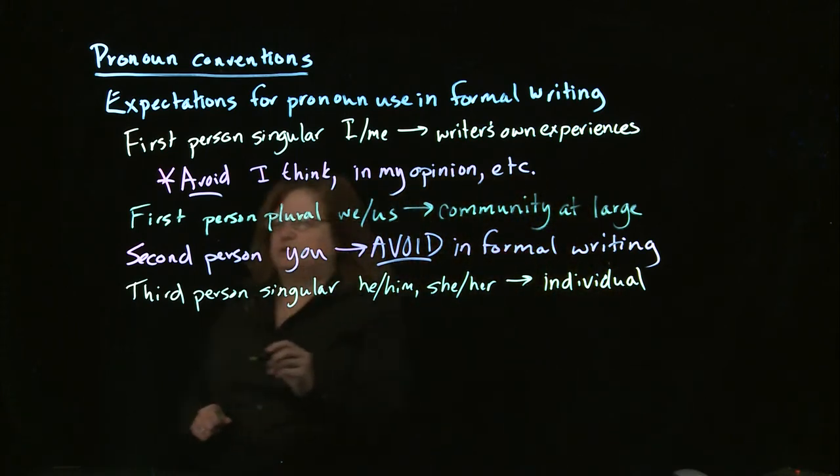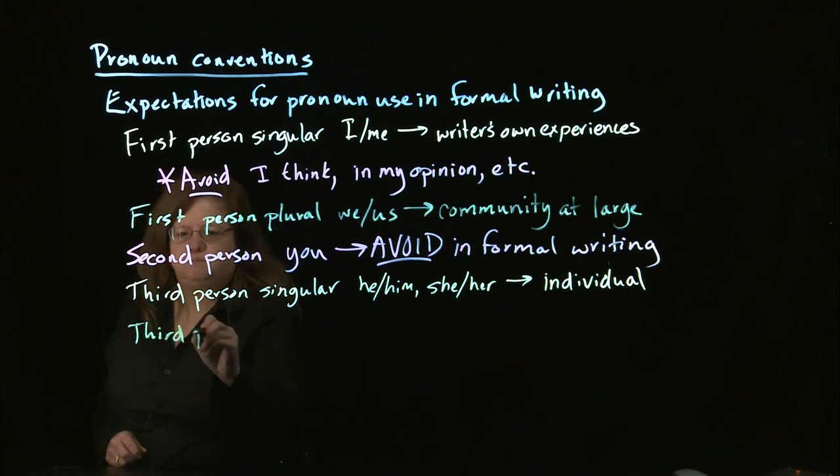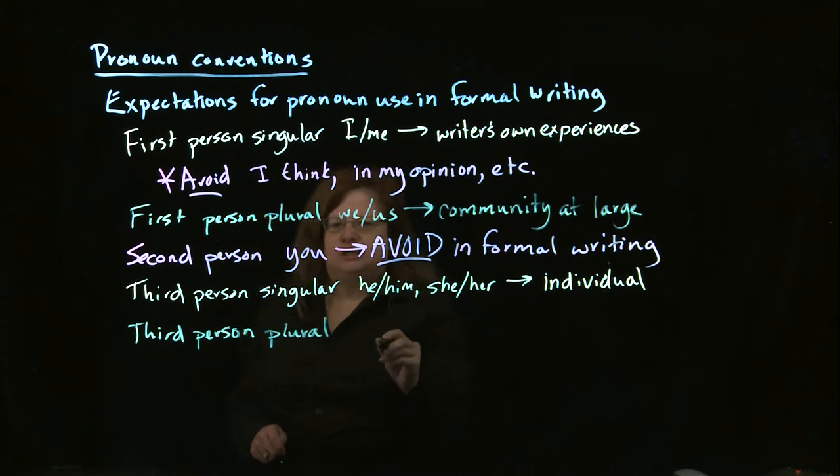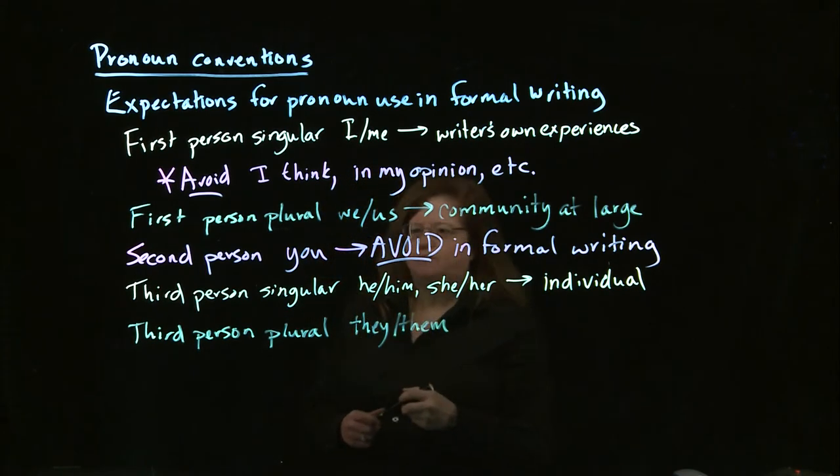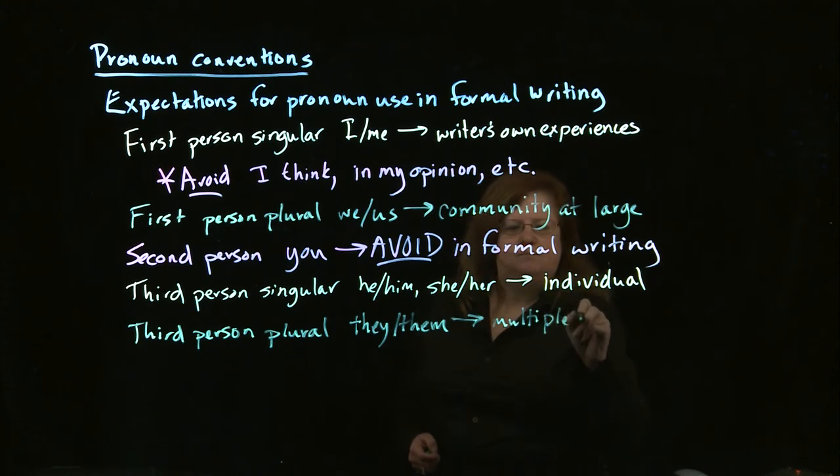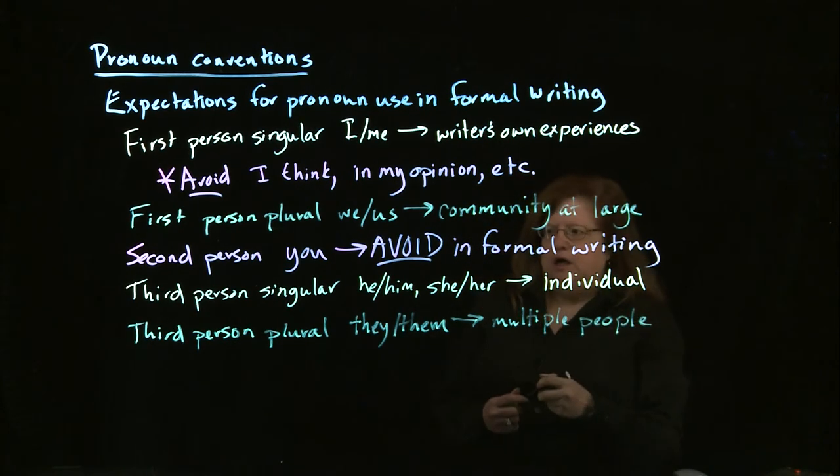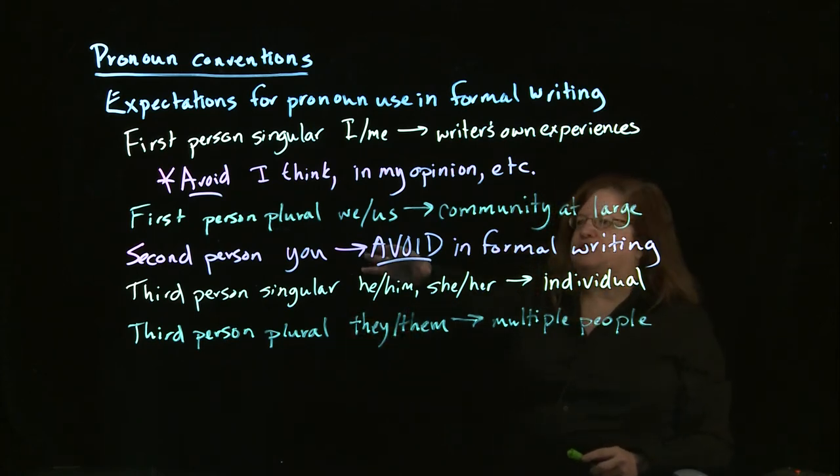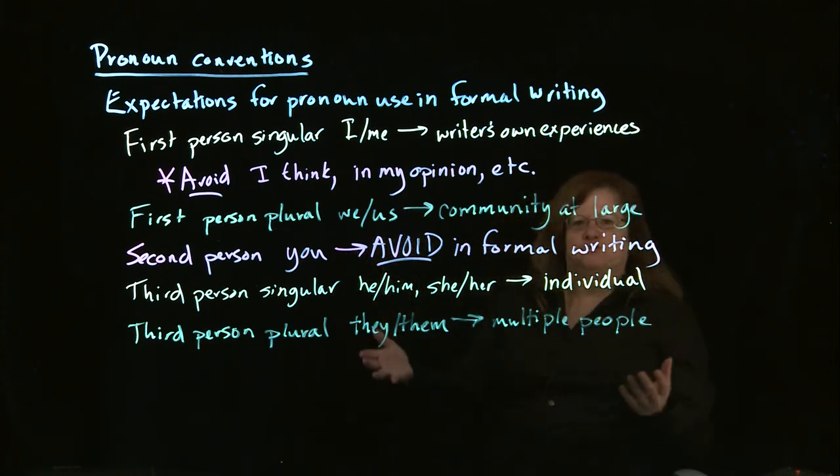On the other hand, there's also the third person plural, which is they and them. And this is the one that you're going to use when you're referring to multiple people. And so when you're looking at the third person plural, this is another option for you if you're talking about you and you is referring to a particular type of people.